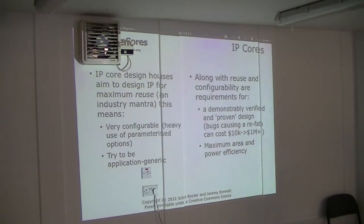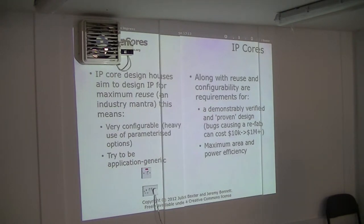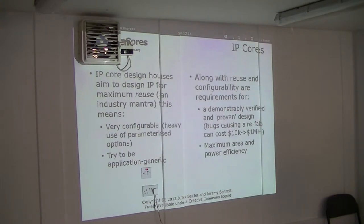Generally, IP blocks are kind of like libraries in software. People develop them, test them, and make sure the functionality works, then bundle them up and distribute them so you can just take one and plonk it down in your design. The software analogy would be linking into libraries and calling via the API. IP cores are instantiated in your design — you instantiate the module and hook things up so that it talks to it.